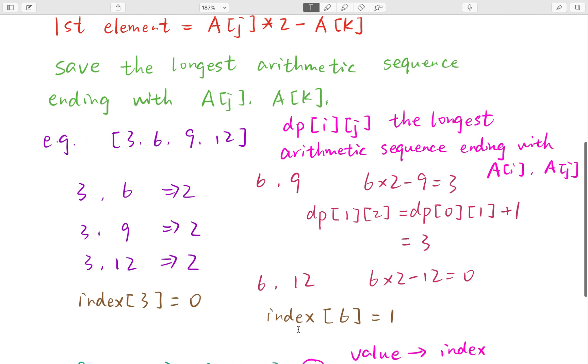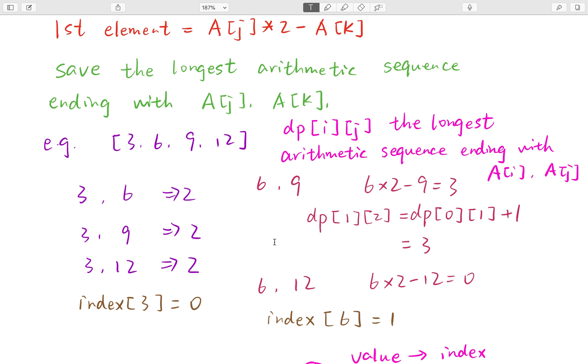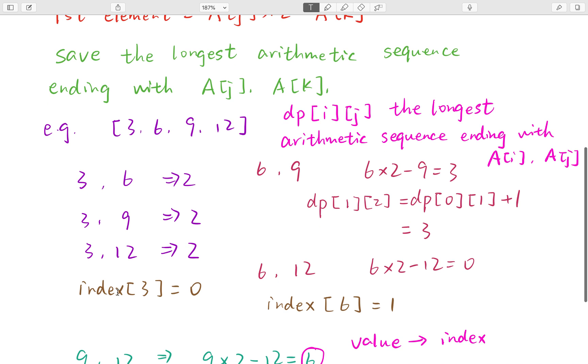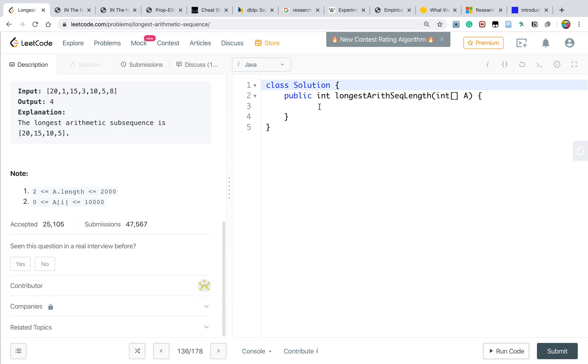So all in all, our solution is just to save the intermediate result of the longest arithmetic subsequence ending with a[i] and a[j]. And we also need an index array to save the element and its corresponding index. Okay. So now let's write the code.